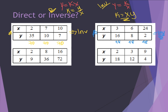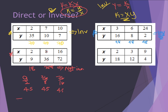Coming down to the third table, if I multiply: 2 times 9 gives 18, but 8 times 36 is 288, not 18. So this is not inverse variation. I try direct variation, using y divided by x: 9 divided by 2 gives 4.5, 36 divided by 8 gives 4.5, and 72 divided by 16 is also 4.5. So this relationship is direct variation.